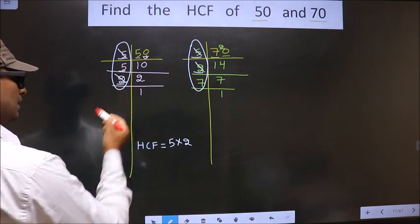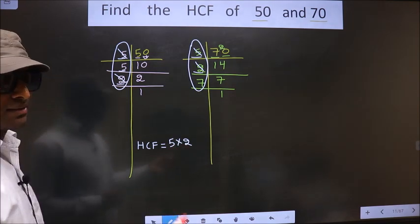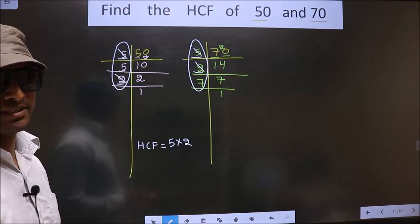No more numbers are left. So now you multiply these numbers, whatever number you get, that is your HCF.